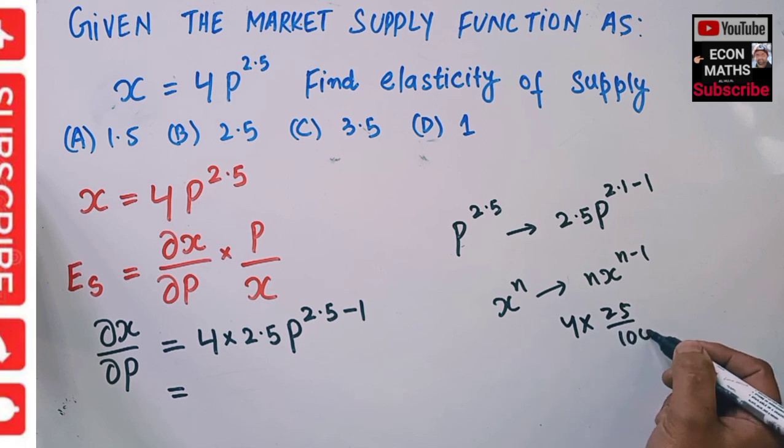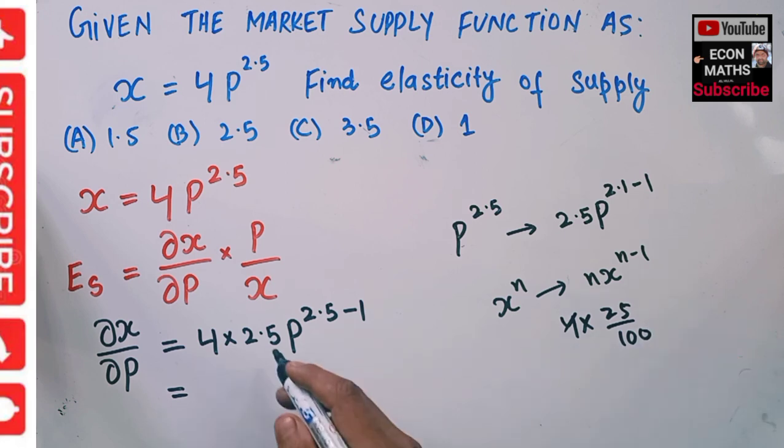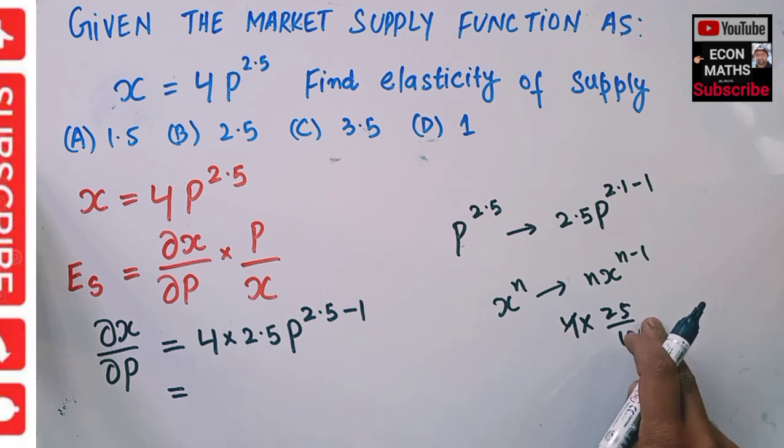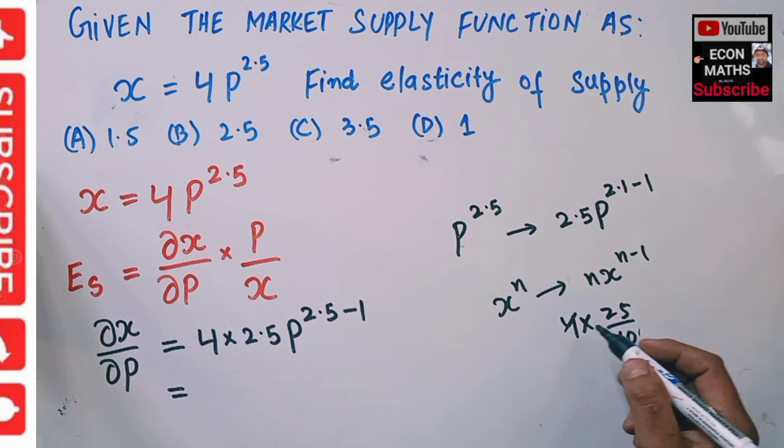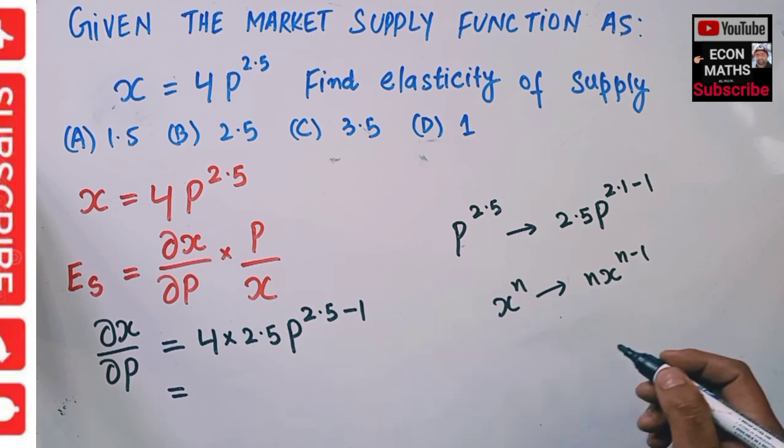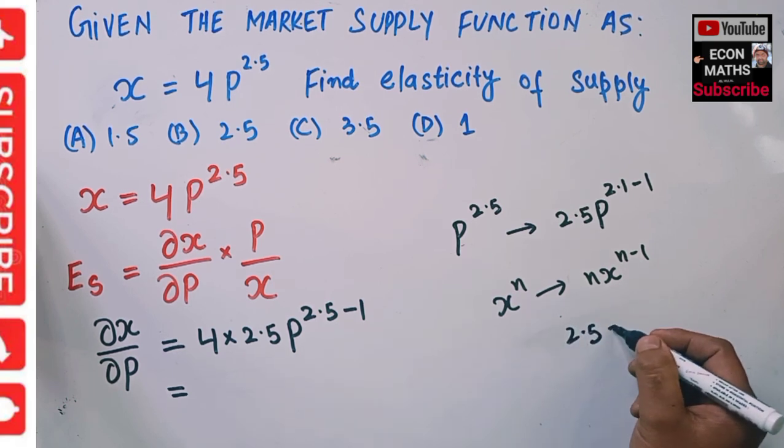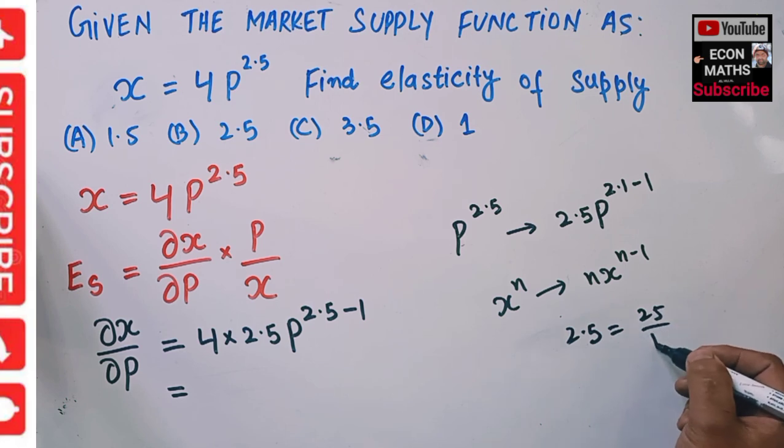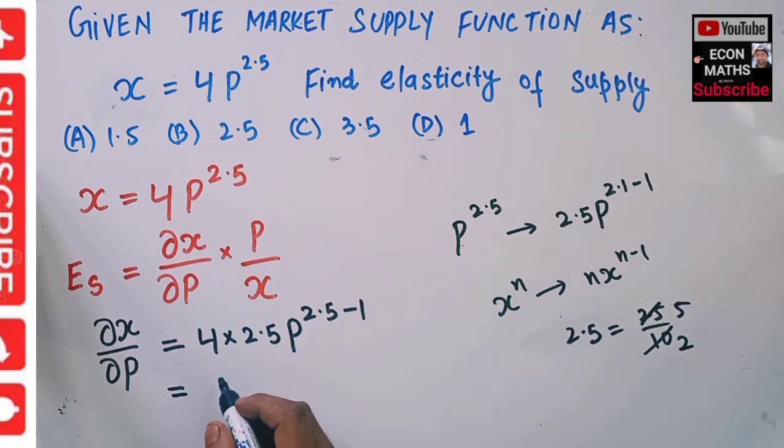2.5 is 25 divided by 10, so we will have 4 × 2.5, which can be written as 25 divided by 10. This comes out to 4 × 5 upon 2, times P^(2.5-1), which is P^1.5.